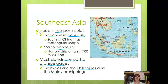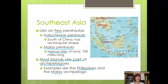Southeast Asia lies on two peninsulas — a peninsula is a body of land that sticks out into the water. One of these is the Indochinese Peninsula, located south of China with kind of a rectangular shape. Then there's the Malay Peninsula, which is very long — a narrow strip of land about 700 miles long. Most of the islands are part of archipelagos, such as Indonesia and the Philippines.